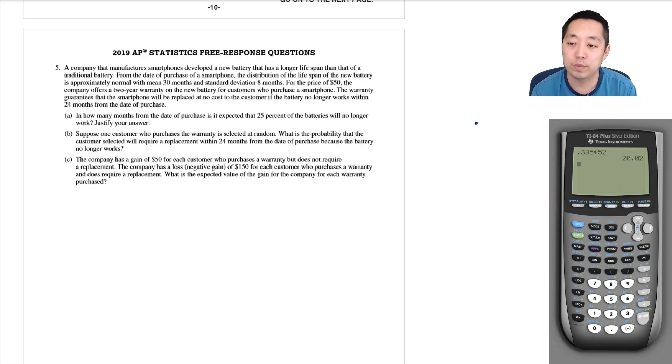We have a company that manufactures smartphones that developed new batteries with a longer lifespan than traditional batteries. From the date of purchase of a smartphone, the distribution of the lifespan of the new battery is approximately normal with mean equals 30 and standard deviation is 8.